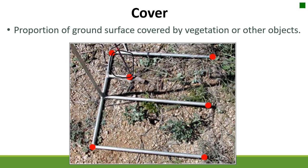Cover is another pretty common measurement on rangelands — it's the proportion of the ground surface covered by vegetation or other objects, including rocks, moss, lichen, bare ground, and litter, which is any detached debris on the surface. You can look at a quadrat and estimate cover by plant species, life forms, or growth forms. If plants fill the whole quadrat, that's 100% cover; half the quadrat is 50%; and if plants fit into about a tenth of the quadrat, that would be about 10% cover.